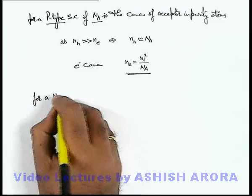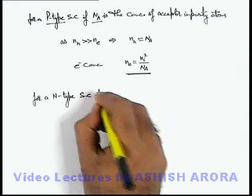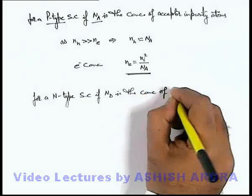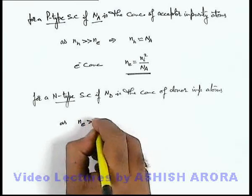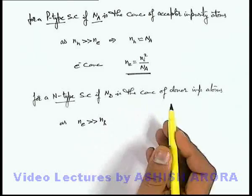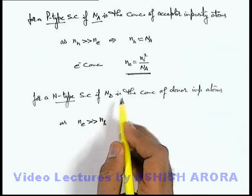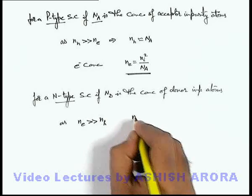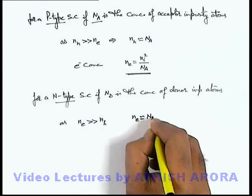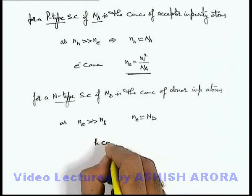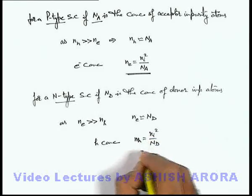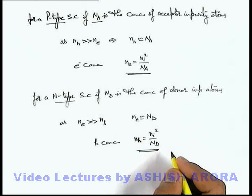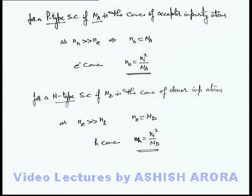Similarly, for a given n-type semiconductor, if N_D is the concentration of donor impurity atoms, then since electron concentration is very large compared to holes — because each donor impurity like phosphorus gives one extra electron to the conduction band without any extra hole — we can write that electron concentration in n-type semiconductor is approximately equal to N_D. This implies hole concentration is given by mass action law as n_i² / N_D. These relations will be used whenever you need to make any analysis based on charge carrier concentration in various problems.